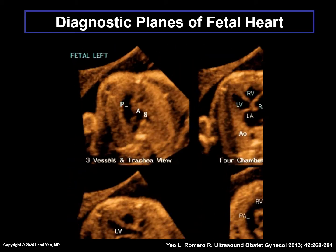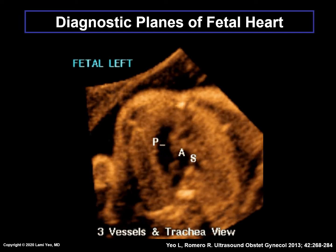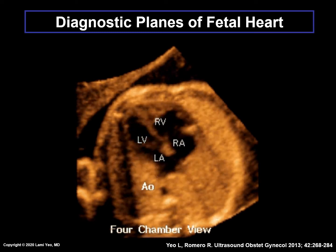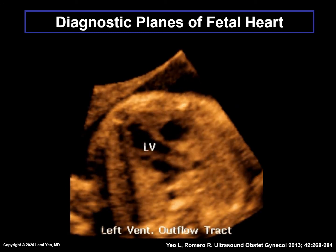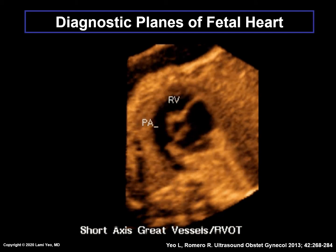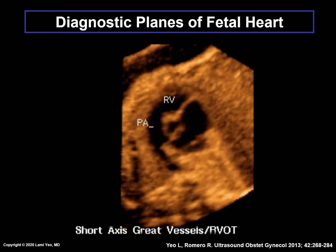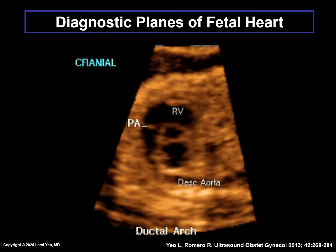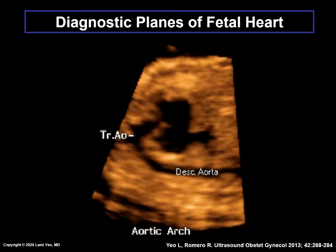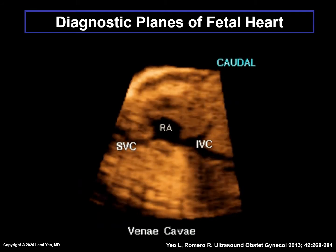For ease of viewing in this presentation, each of the nine diagnostic planes is shown magnified in sequential order: the three vessels and trachea view, four-chamber view, the five-chamber view, left ventricular outflow tract, short axis view of the great vessels, right ventricular outflow tract, abdomen, ductal arch, aortic arch, and the superior and inferior vena cava.